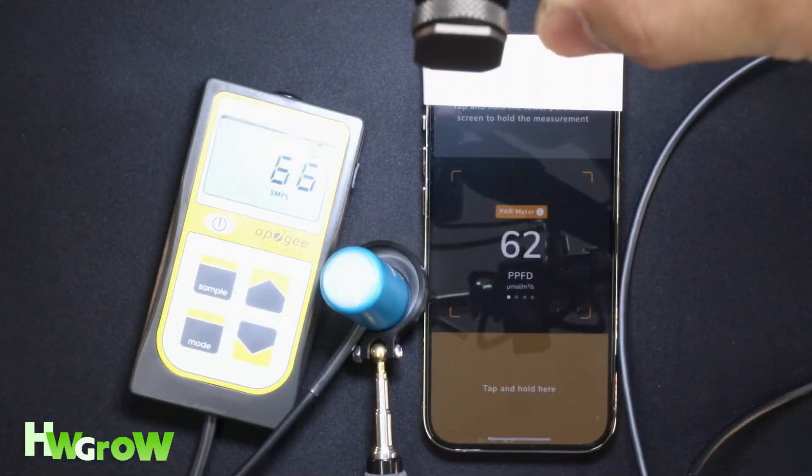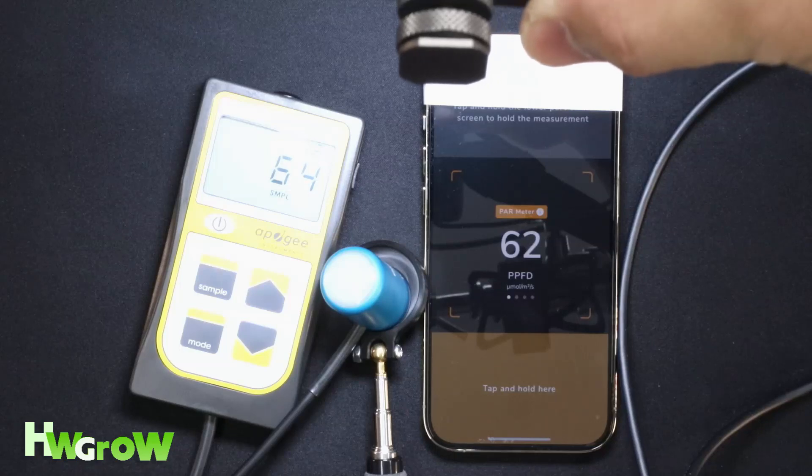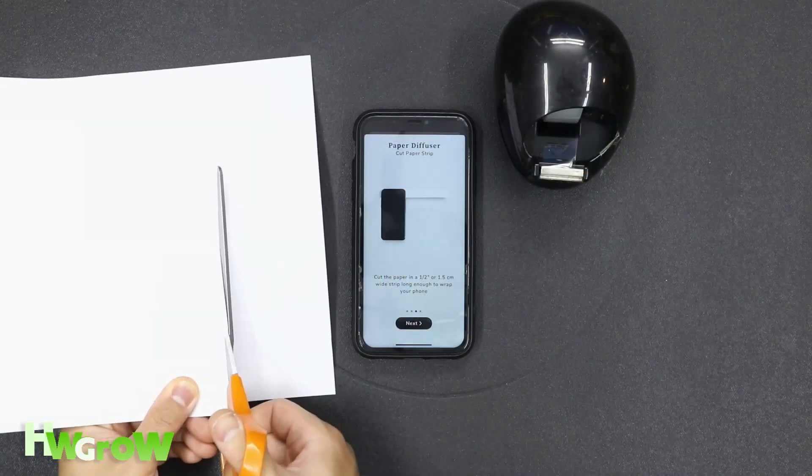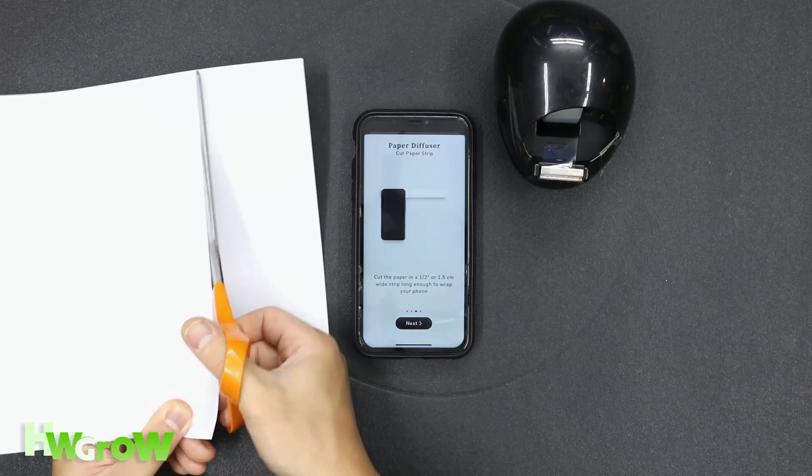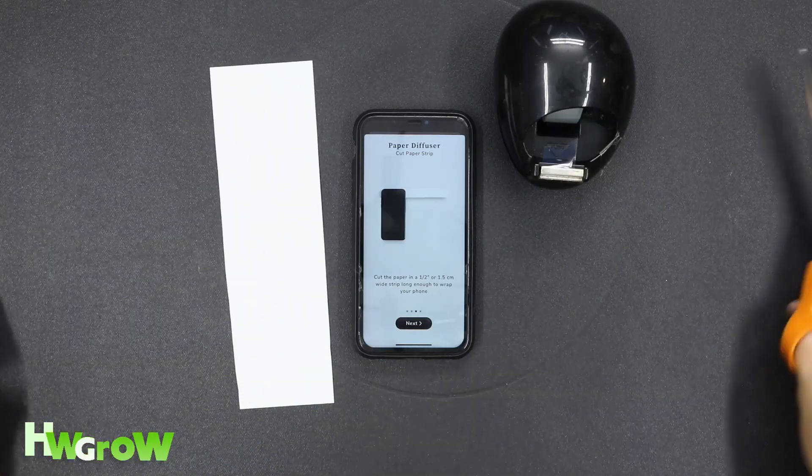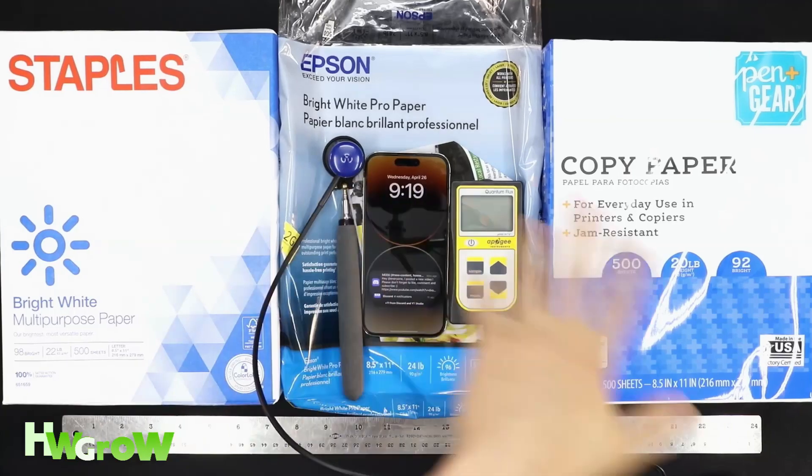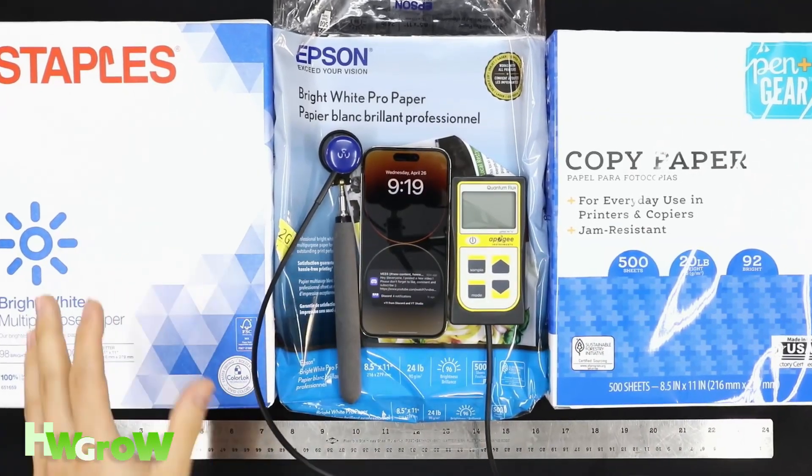I've researched this app thoroughly. I even made my own tutorial on how to use it, and if you're iOS, you need to make a paper diffuser if it tells you. One of the things I discovered is the paper type actually makes a difference.